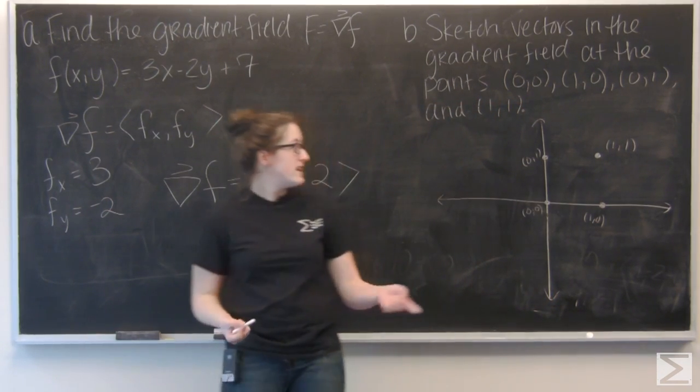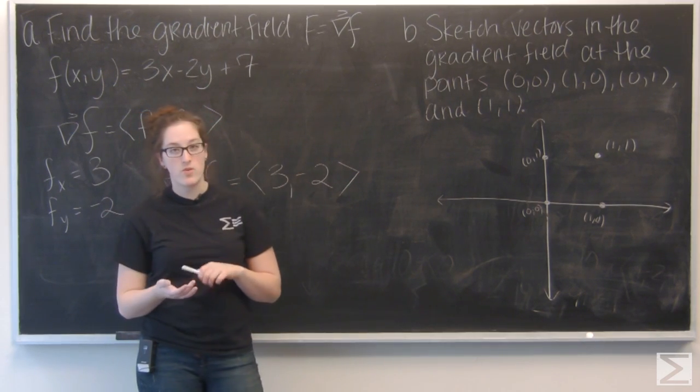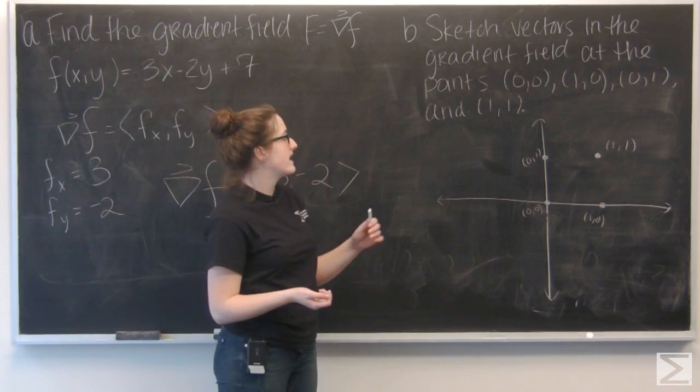Part b asks us to sketch vectors in the gradient field at the points (0,0), (1,0), (0,1), and (1,1).